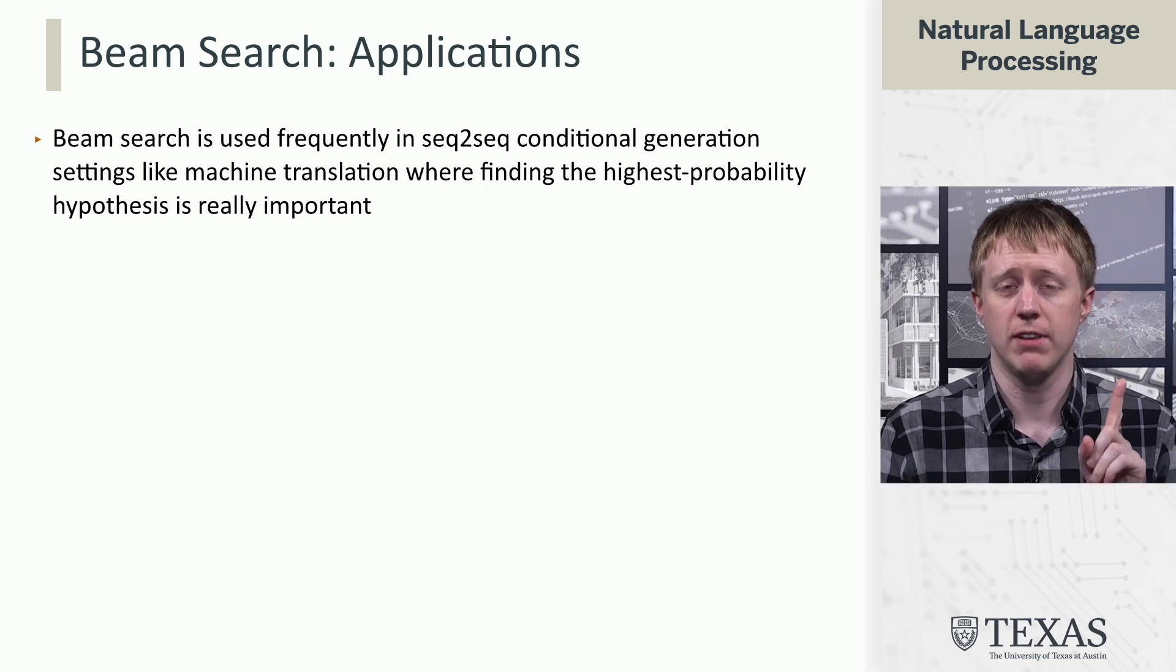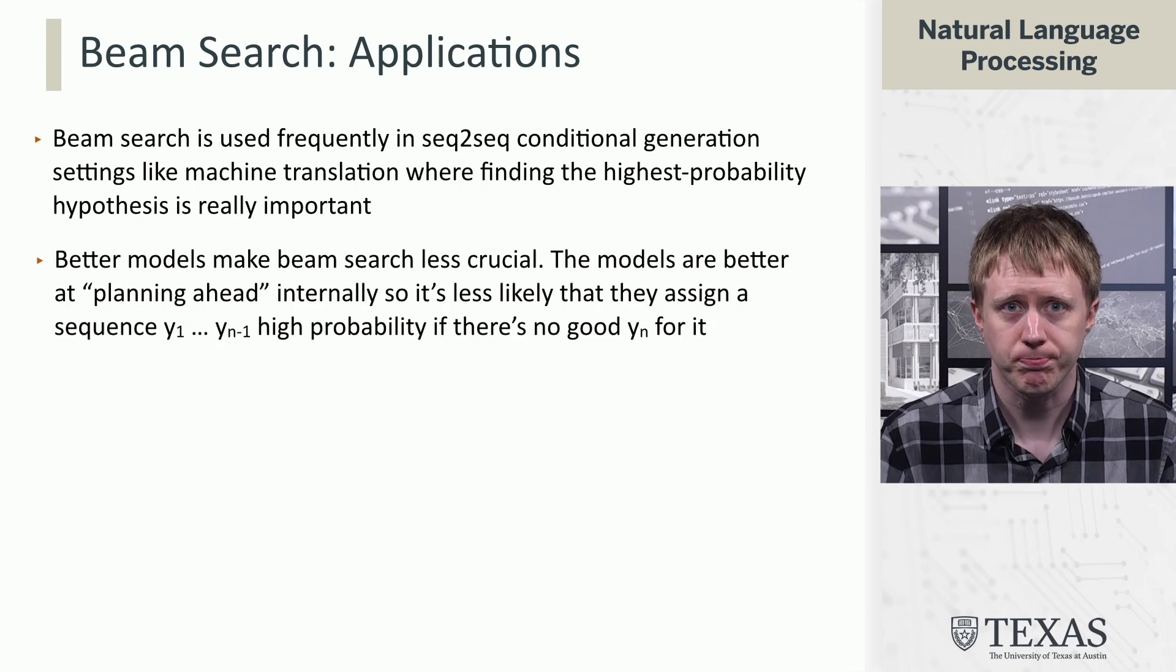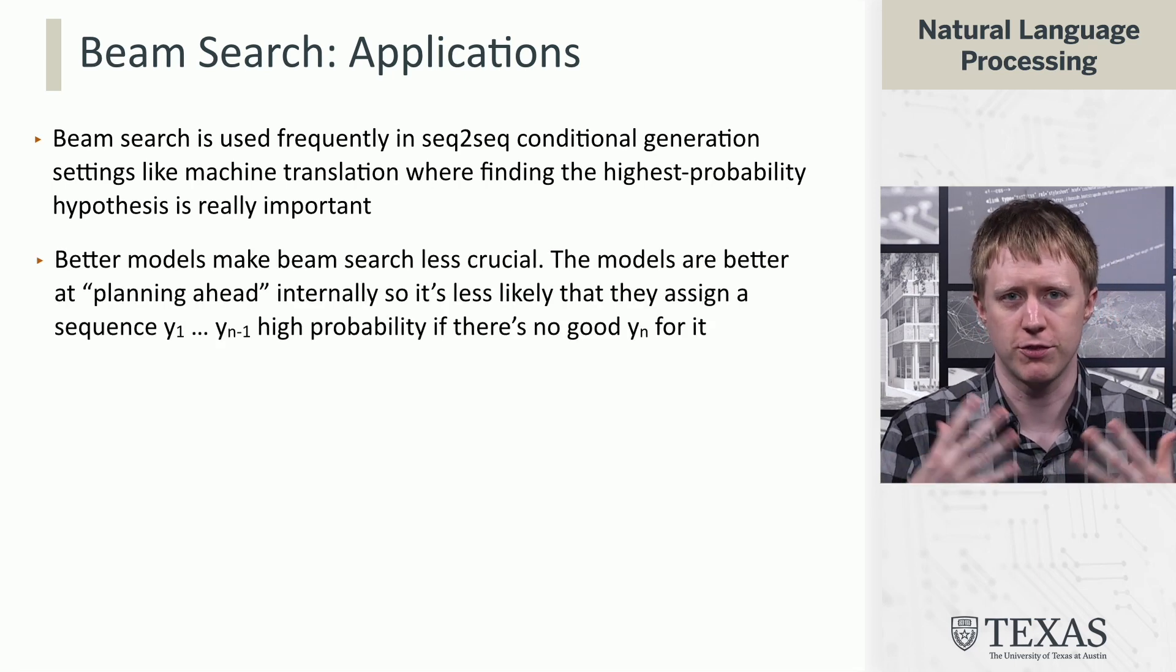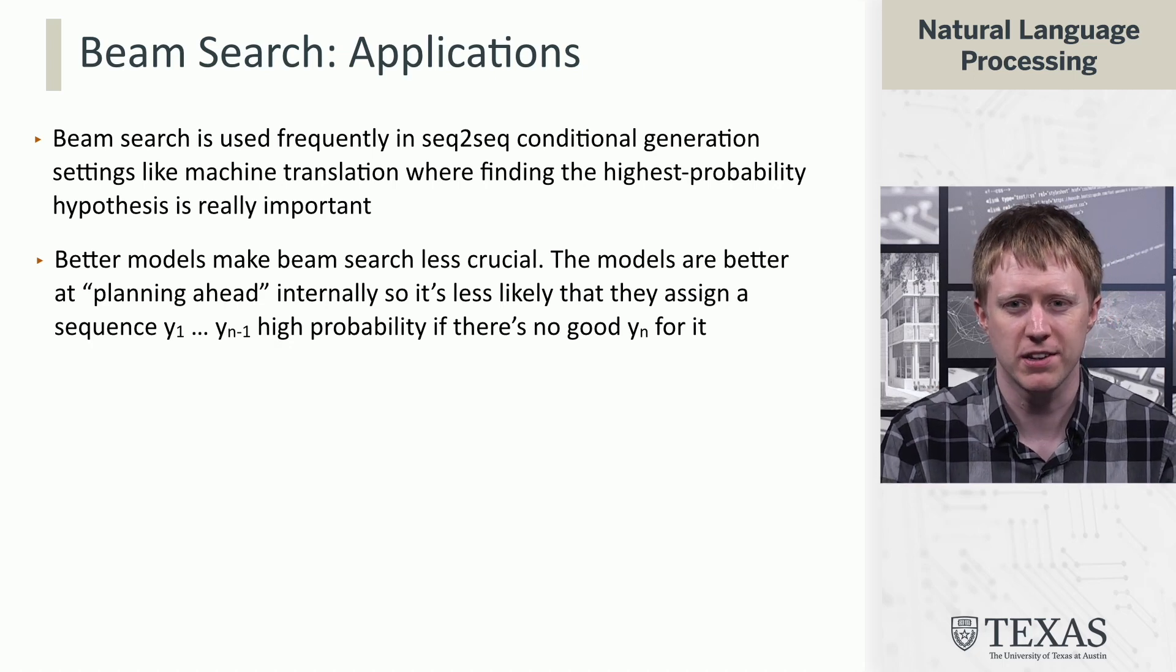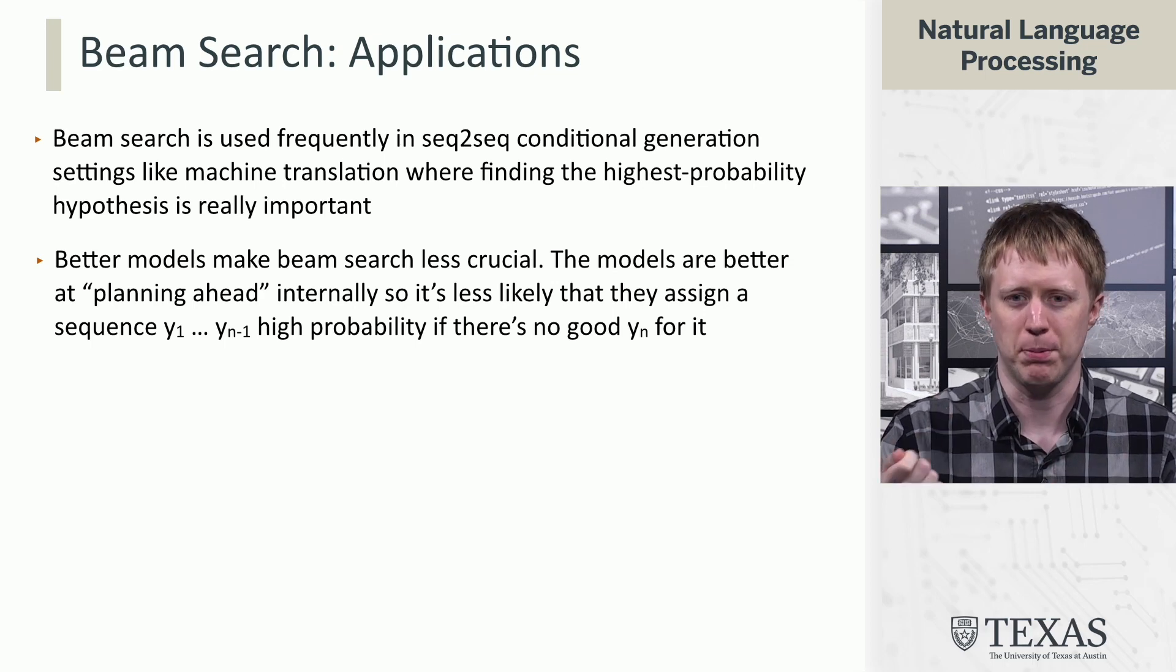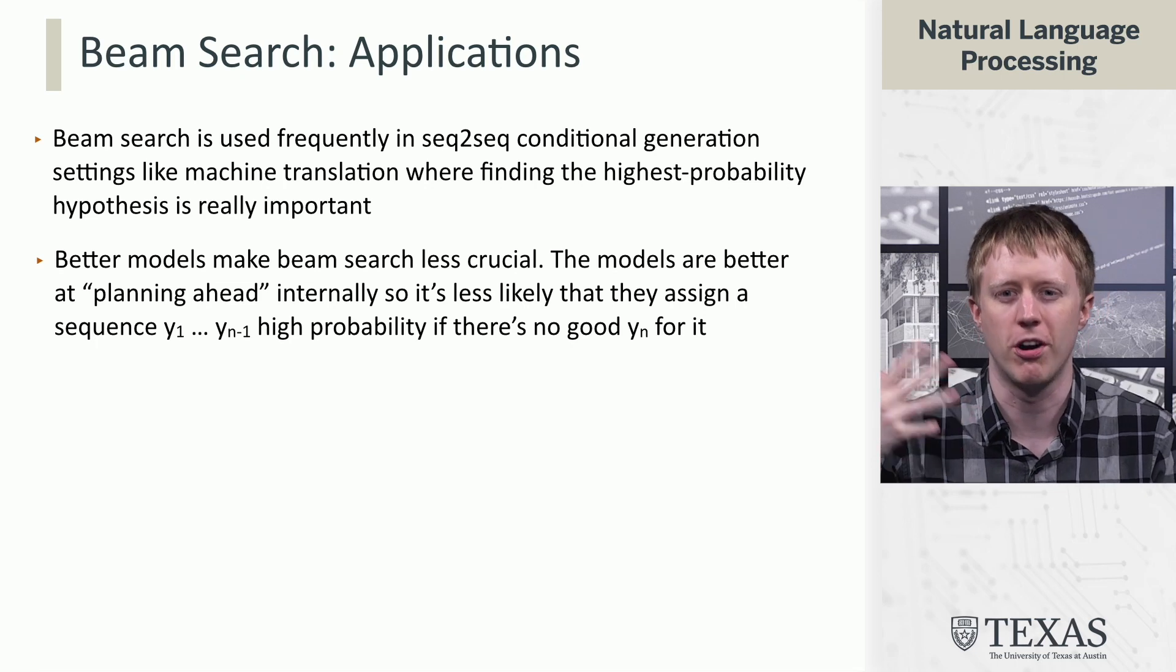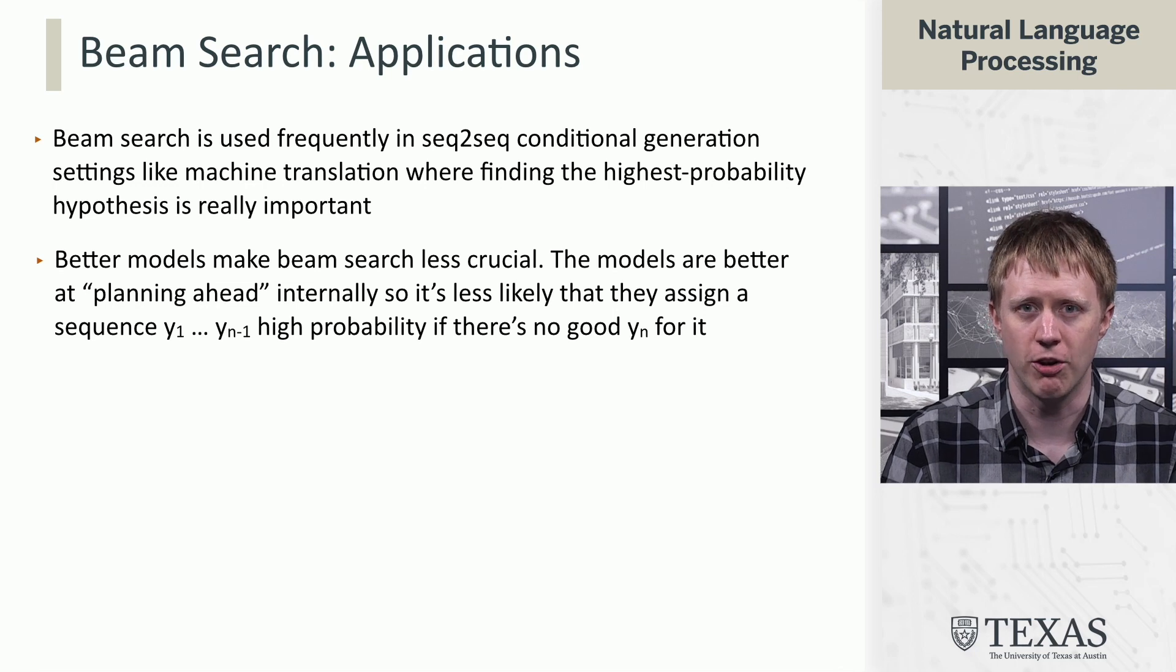But we'll see later that for certain types of applications, beam search is not what you want. And it's also the case that once you get bigger and bigger transformer models, beam search becomes less crucial because these models already do a little bit of kind of not explicit planning ahead, but the modeling of the distribution of the next word already accounts for the fact that more stuff is going to be generated later.